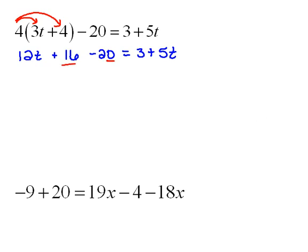Now, hopefully you notice that we have some common terms on the same side of the equals that we can gather together. So now we have 12t, and then a positive 16 and a negative 20 is a negative 4 equals 3 plus 5t.